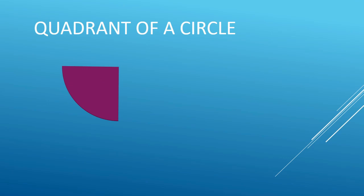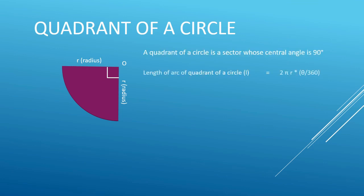In a circle, a quadrant has an inside angle of 90 degrees. The length of arc of a quadrant is given by theta divided by 360, where theta is 90 degrees. The length of arc is 2πr divided by 4, which equals πr by 2.